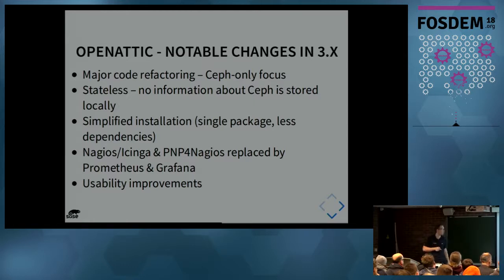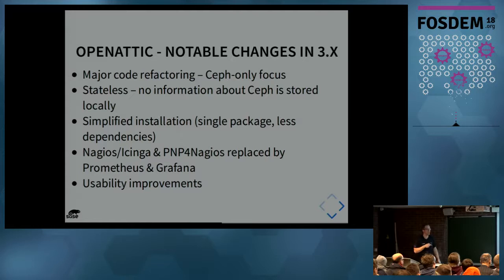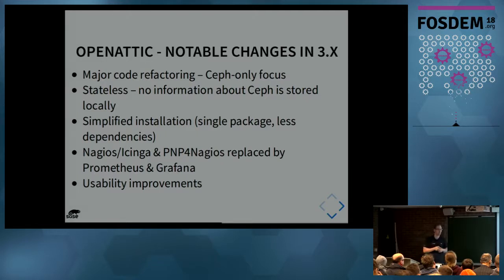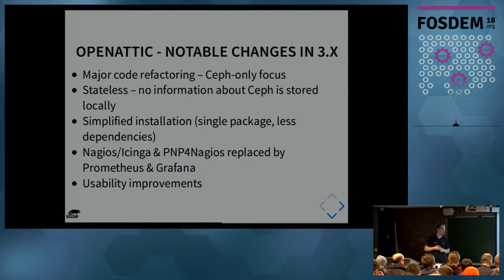As mentioned earlier, it's now completely stateless. You can just spin it up, do changes somewhere else — Openattic will instantly recognize them because we gather the data live from the cluster. From a developer perspective, a slightly simplified installation: we now have just a single package instead of a UI and a backend package. We removed a lot of dependencies because we removed the traditional storage stuff. Really importantly and noticeable in the web UI, we removed Nagios and Icinga with PNP for Nagios — something more 2000 — and replaced it with Prometheus and Grafana.